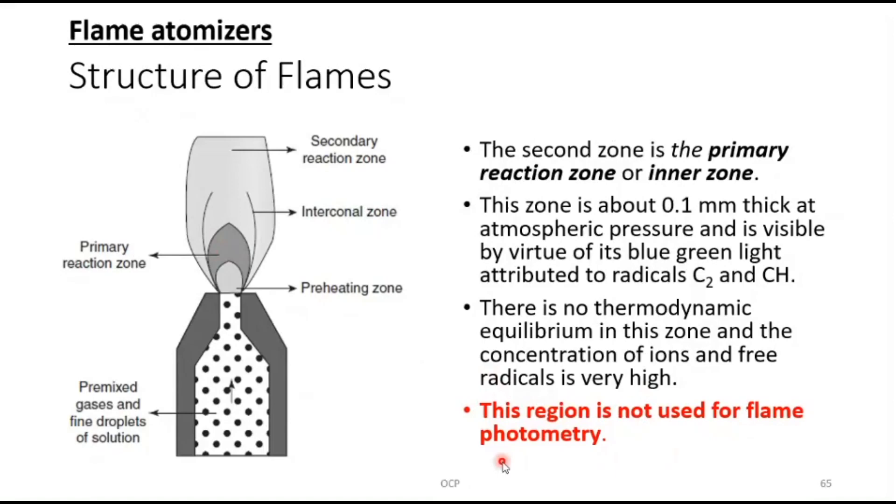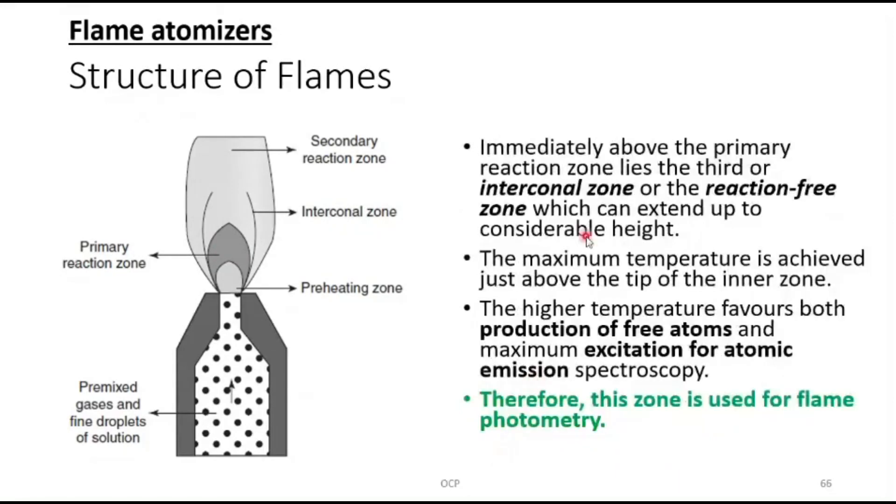Immediately above the primary reaction zone lies the third interconal zone, the reaction free zone. In this region there is no reaction happening. The maximum temperature is achieved just above the inner zone, in this region. The high temperature favors production of free atoms for emission spectroscopy, therefore this is the zone which is used for flame photometry.